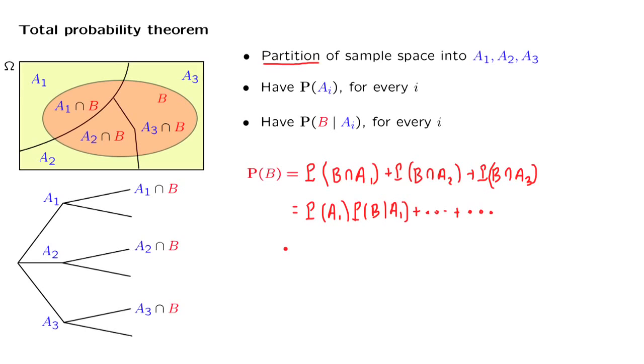So putting everything together, we have derived the formula of this form. The total probability of event B consists of the sum of the probabilities of the different ways that B may occur.